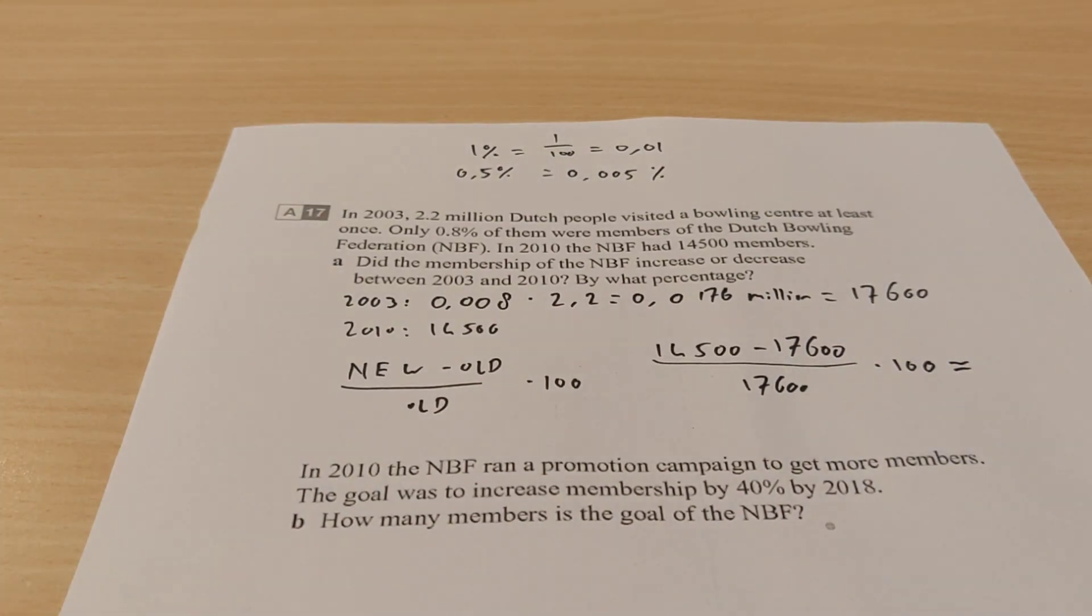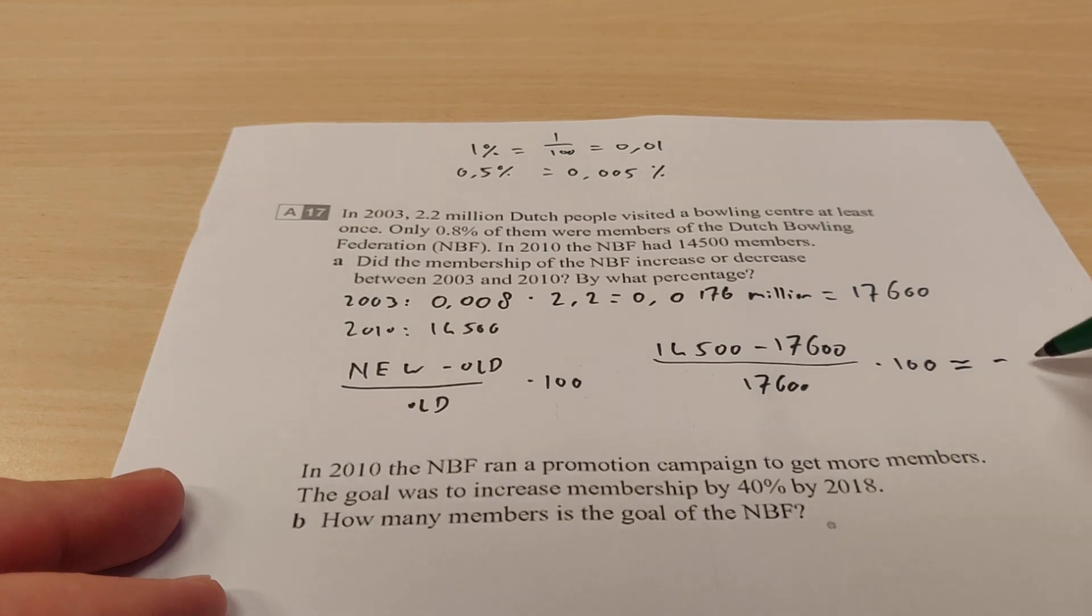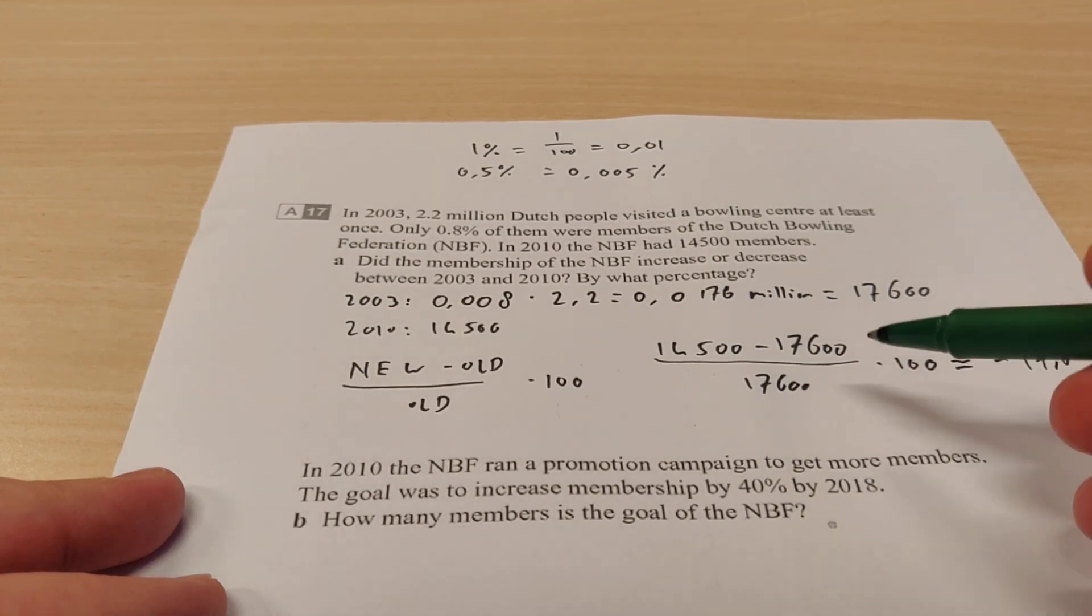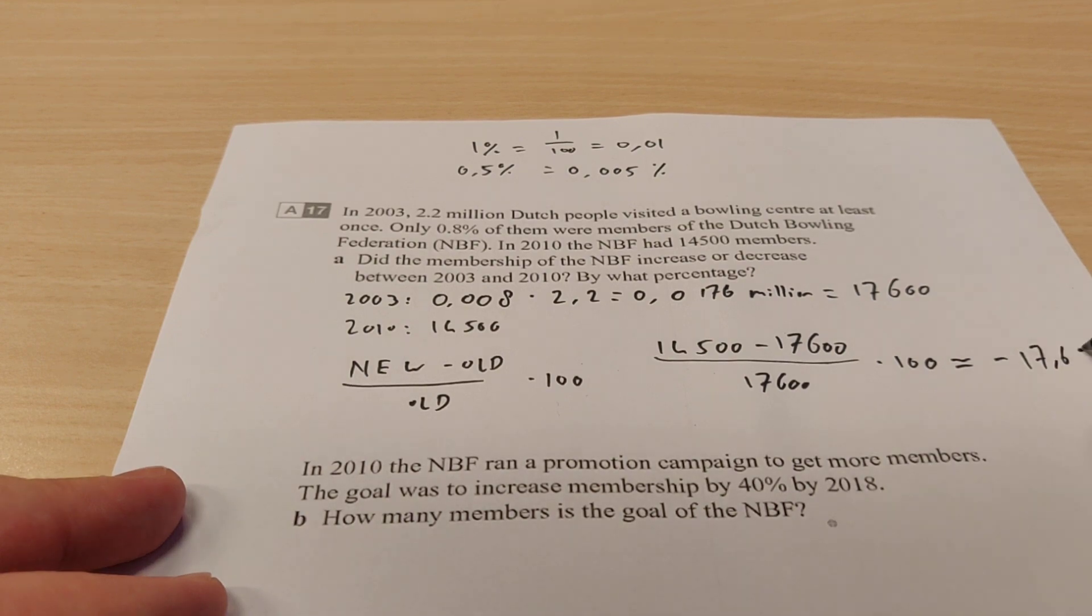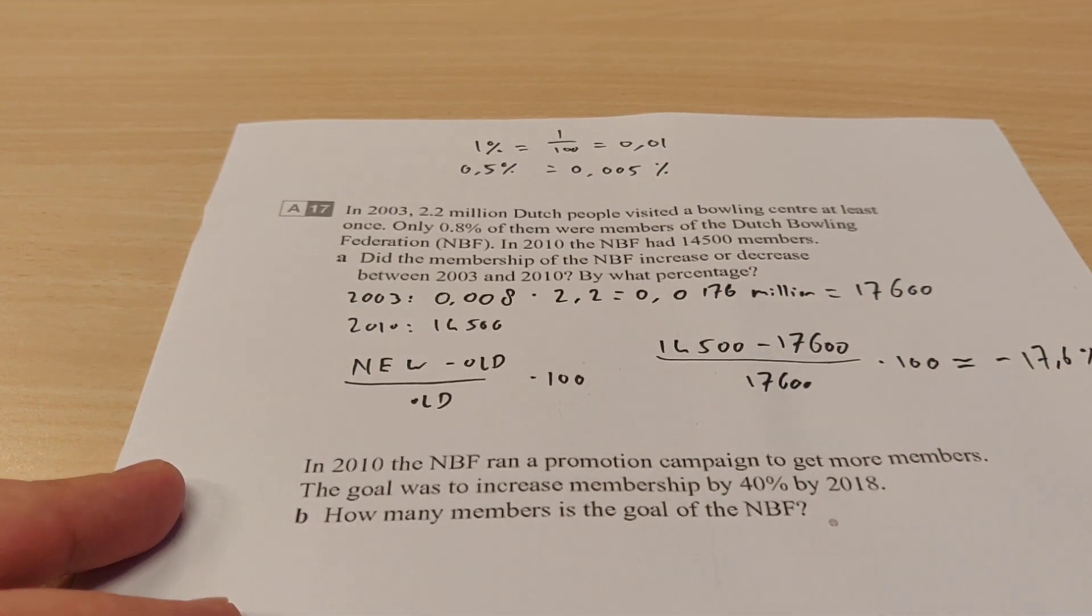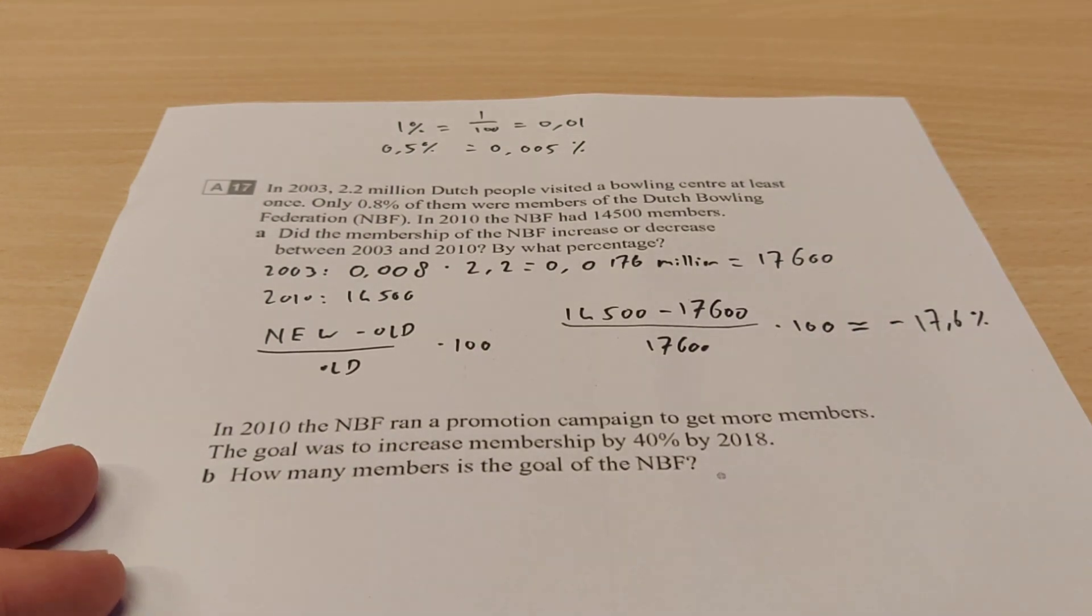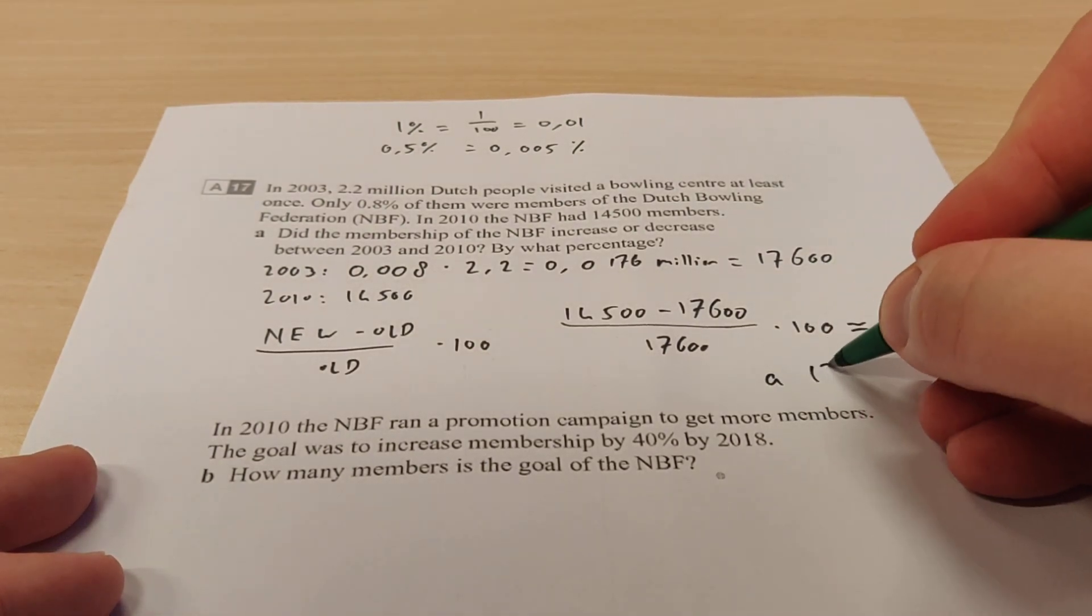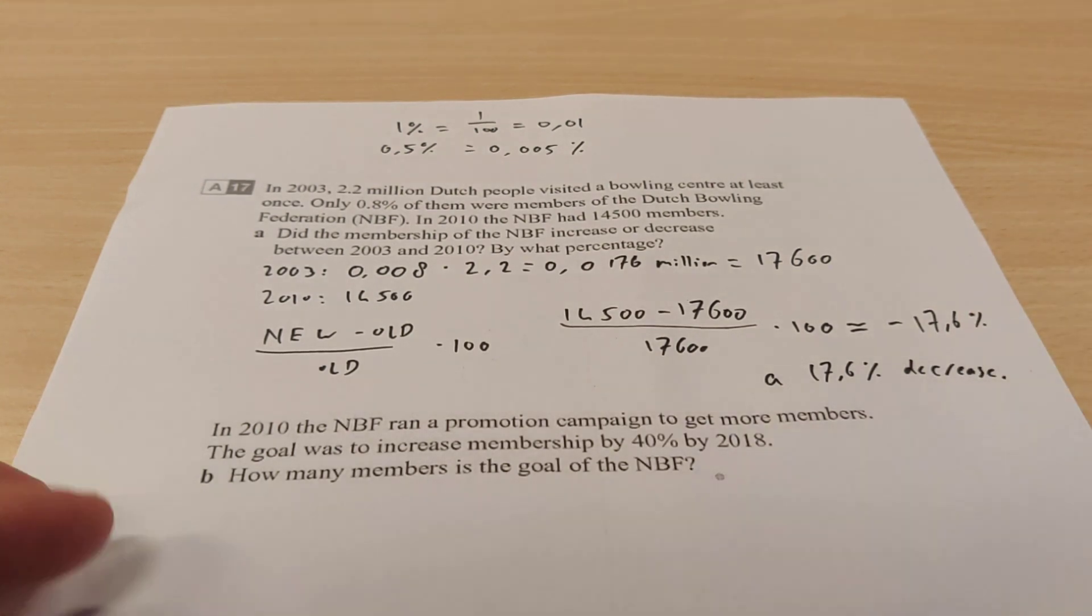Now you can type that into your calculator. And if you type that into your calculator, you will get minus, that's why it's a decrease, and then 17.6. It's a coincidence that this is 176 and this is also. So in another exercise, you'll see that it will be different. So don't think that it will always be 176 here. It was just a coincidence. So it's a 17.6% decrease. And that's the answer.